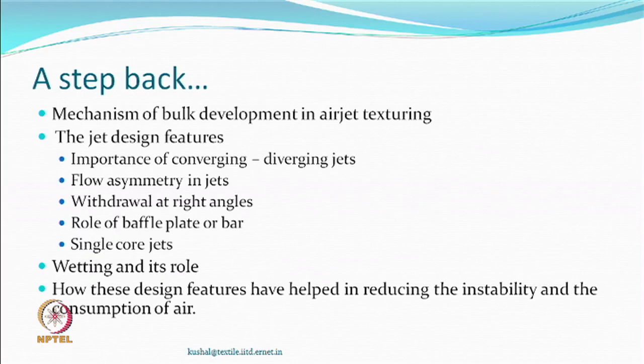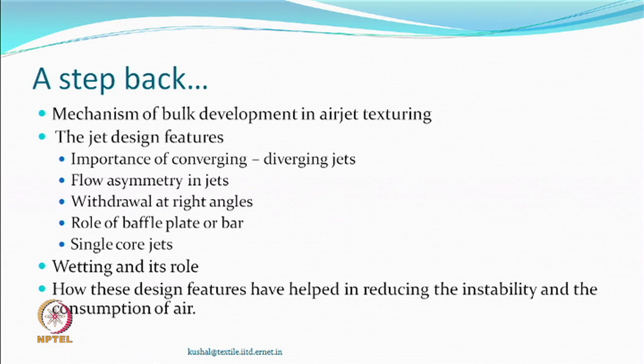Looking back, we have understood the mechanism of bulk development in air jet texturing, the design of the jet, features such as converging-diverging types of jets, flow asymmetry, withdrawing the yarn at right angles, the role of a baffle plate or bar, and also single core jets. We also learnt about wetting and how some design features helped in reducing instability and the consumption of air.